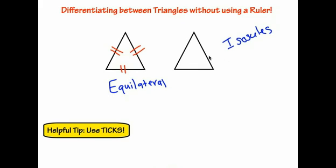For the isosceles triangle on the right, we just want two sides the same. So I put two ticks on this side and two ticks on this side — now we have two sides the same. And to make the third side different, we give it one tick or three ticks, showing that those two are the same but this one is different.